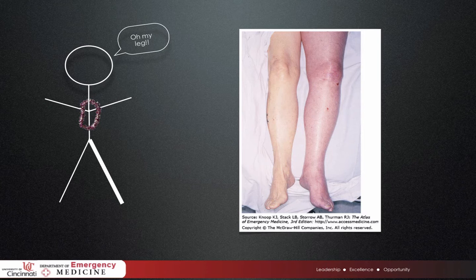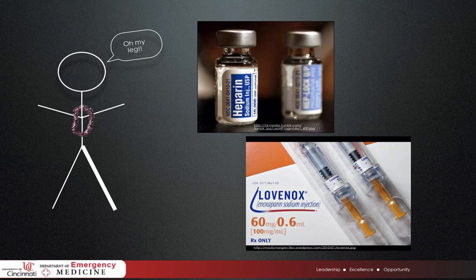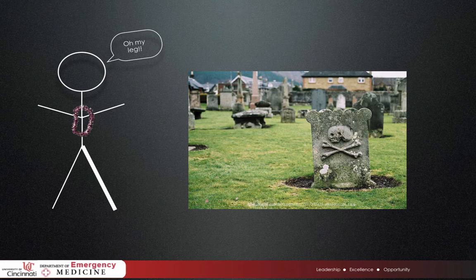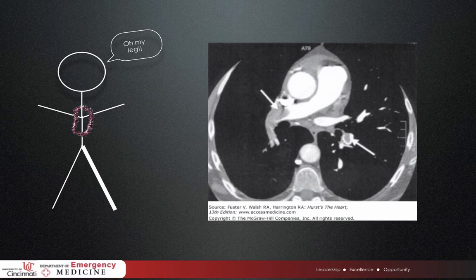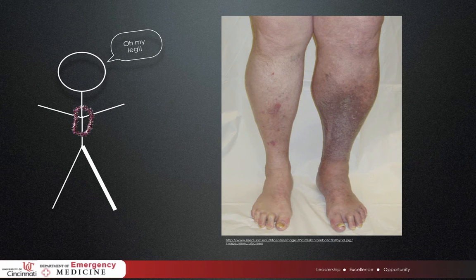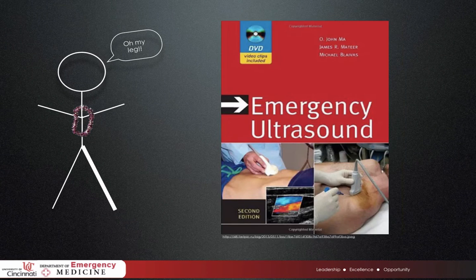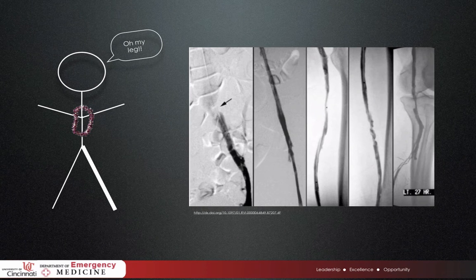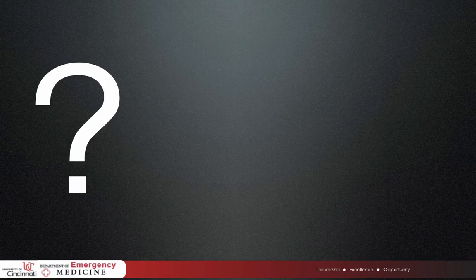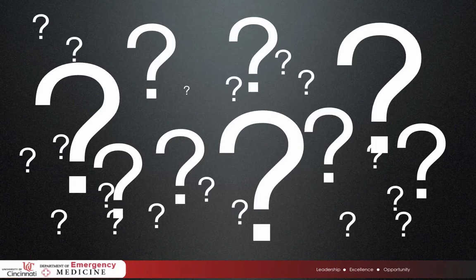Maybe you've seen a patient like this or maybe you haven't, but undoubtedly you could come up with a number of questions about her and her condition. Is unfractionated heparin or low molecular weight heparin a better treatment? What's the mortality for patients like this? What's the chance she'll go on to develop a PE or post-thrombotic syndrome? Is ED bedside ultrasound as good as venous duplex in the lab for diagnosing DVT? Will catheter-directed TPA prevent post-thrombotic syndrome? The questions are essentially endless, but all share some very common characteristics.